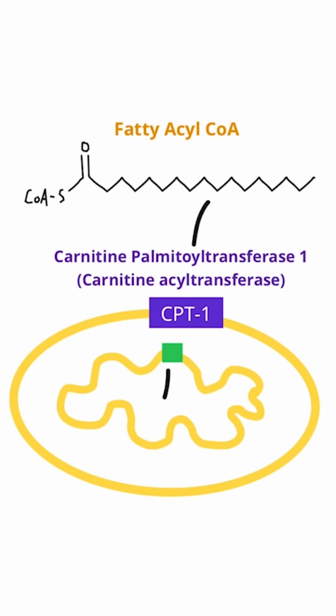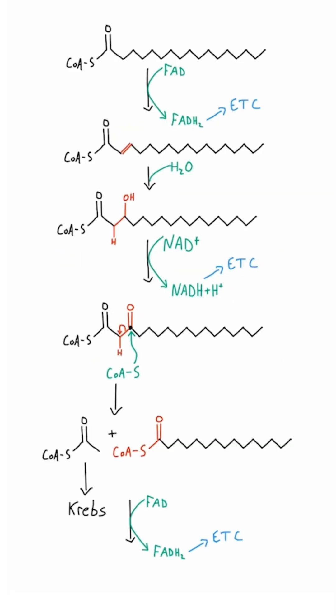Fatty acyl coenzyme A then has to get transferred to the matrix of the mitochondria. This is a multi-step process requiring multiple enzymes, but the key one to know is CPT1, or carnitine palmitoyl transferase 1, also called carnitine acyl transferase. This is also the rate-limiting step of the entire fatty acid oxidation process.